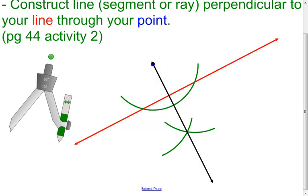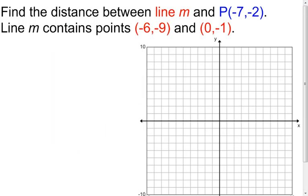Now depending on how your computer screen is set up, it's going to look perpendicular. Sometimes things get distorted as you go from one computer to the next, but you should be able to look at this on your paper and see that it actually looks perpendicular. Now let's get into something new — here's what we're actually trying to do.